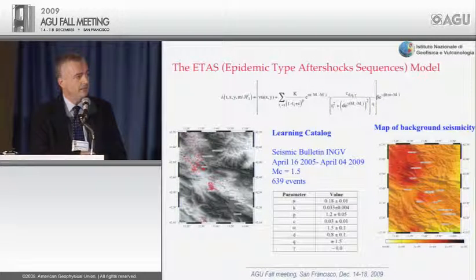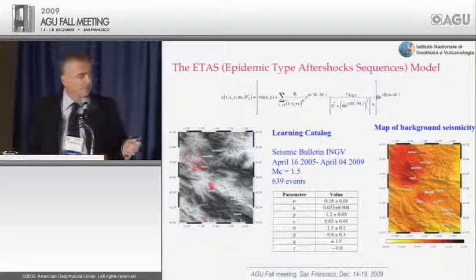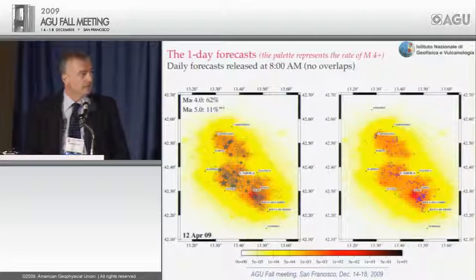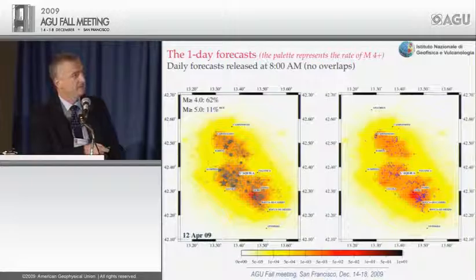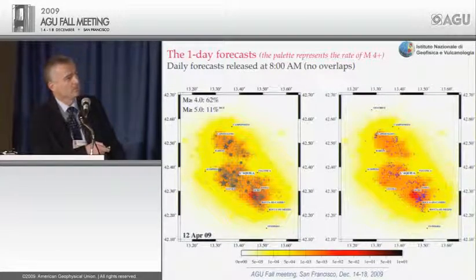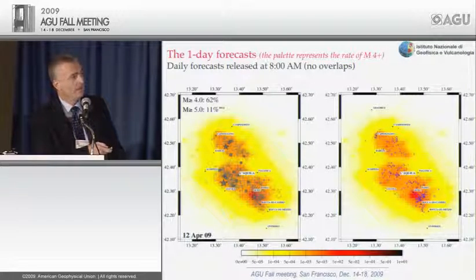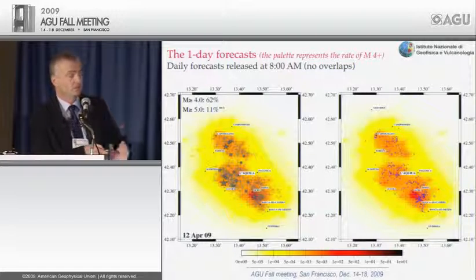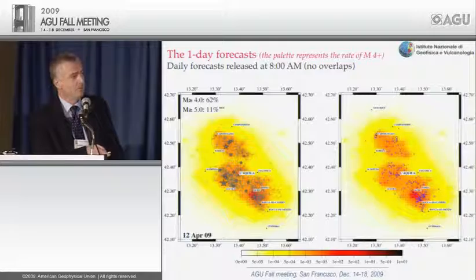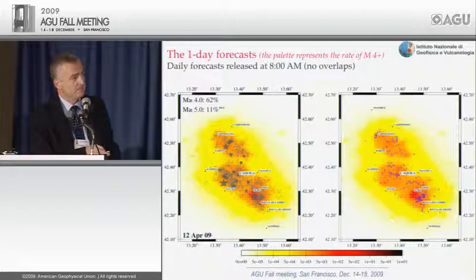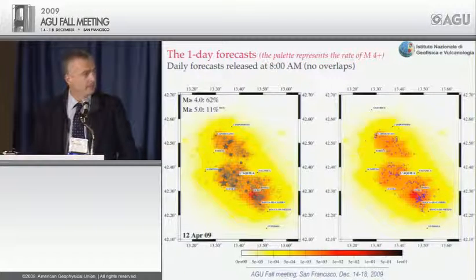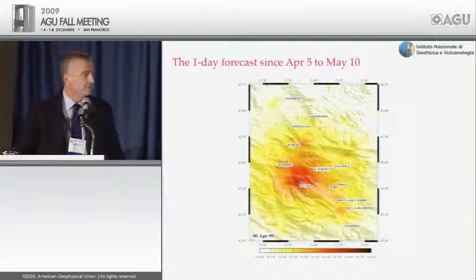Starting from April 7, we prepared daily probability maps for earthquakes, reporting the rate of events expected for magnitude 4 and probabilities for magnitudes 4 and 5 in the whole area. These maps were produced using all the earthquakes that had occurred up to that point, and blue dots on the maps represent earthquakes that really occurred during the forecasting time window. A movie reports the first 40 days of the aftershock sequence.